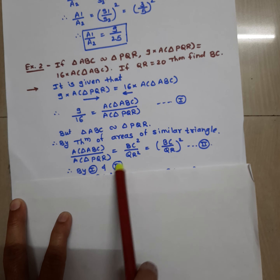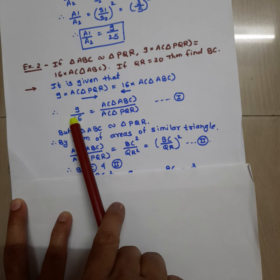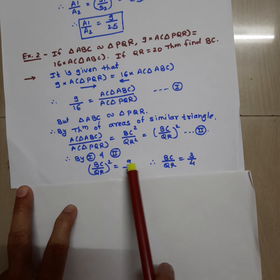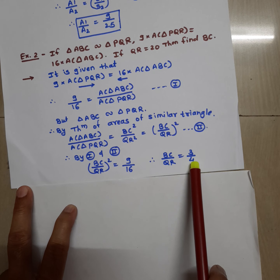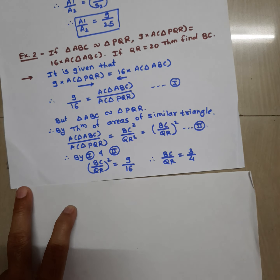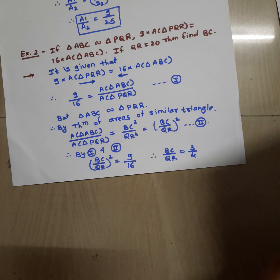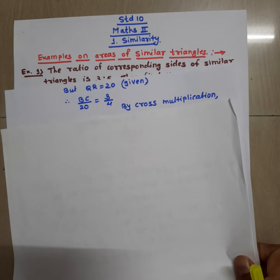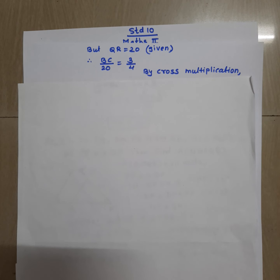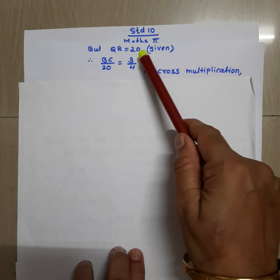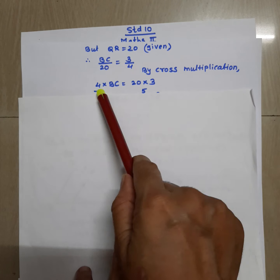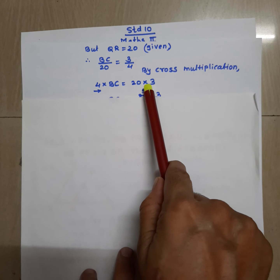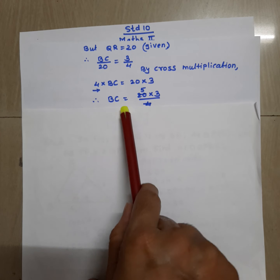Observe that equation 1 and equation 2 both contain area of triangle ABC upon area of triangle PQR. Therefore (BC upon QR) squared is equal to 9 upon 16. Taking the square root on both sides, BC upon QR is equal to 3 upon 4. Since QR is given as 20, substituting: BC upon 20 is equal to 3 upon 4. By cross multiplication, 4 × BC is equal to 20 × 3.